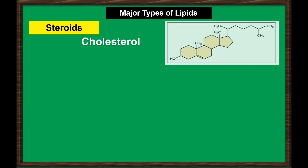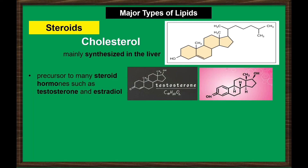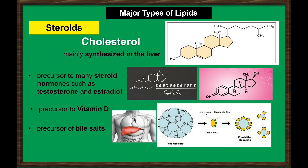Cholesterol is the most common steroid and is mainly synthesized in the liver. Although cholesterol is often spoken of in negative terms, it is necessary for proper functioning of the body. It is the precursor to many steroid hormones such as testosterone and estradiol, which are secreted by the gonads and endocrine glands. It is also the precursor to vitamin D and to bile salts, which help in the emulsification of fats and their subsequent absorption by cells. Cholesterol is also a component of the plasma membrane of animal cells, found within the phospholipid bilayer.